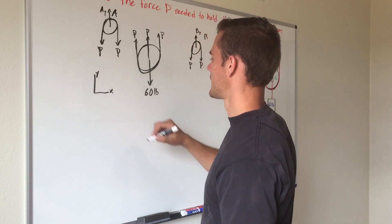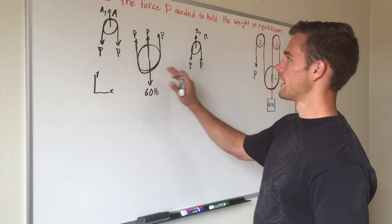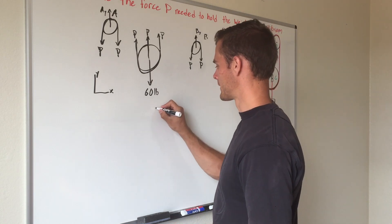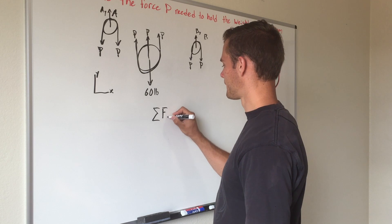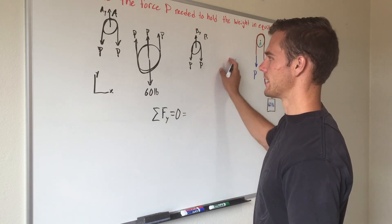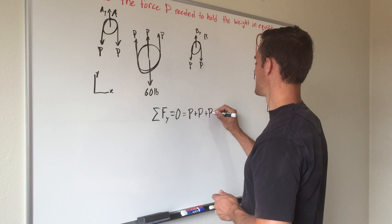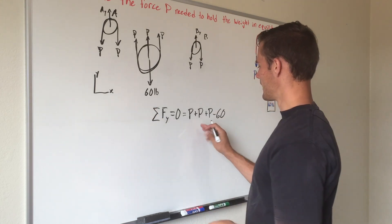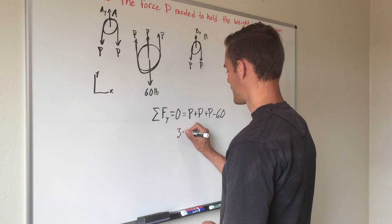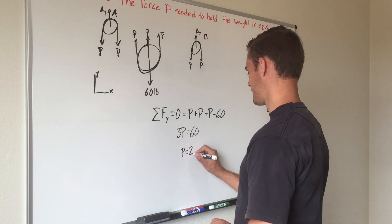We establish our coordinate system with x and y directions. Pulley C is the one free body diagram with a known force, so we start there. Taking the sum of forces in the y-direction equal to zero for equilibrium: P + P + P − 60 = 0. Adding the three P terms gives 3P = 60. Dividing both sides by three, we get P = 20 pounds.